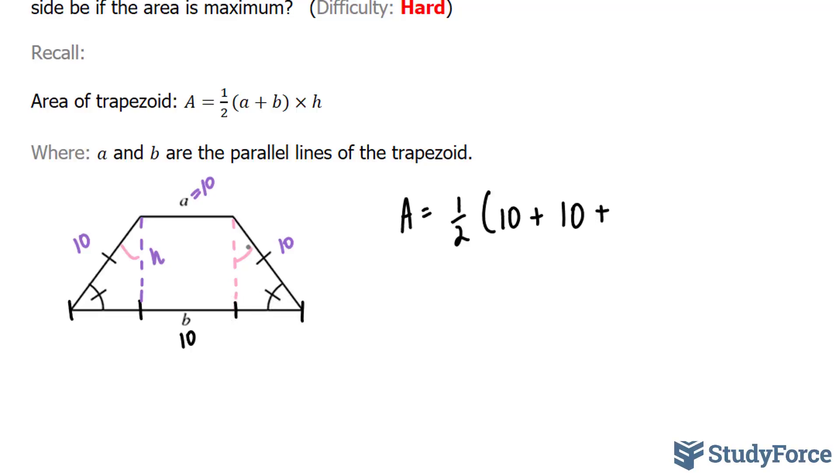Now how do we represent that? Well, if we take this as our theta, and I used this as my reference angle to find out the length of this, we would need to use sine, because sine is opposite over hypotenuse. So I would write down sine theta times my hypotenuse, which is 10.